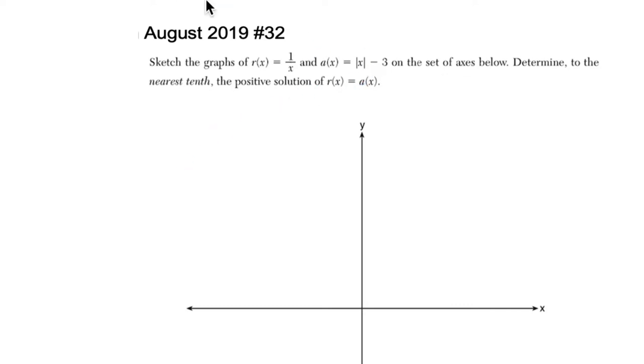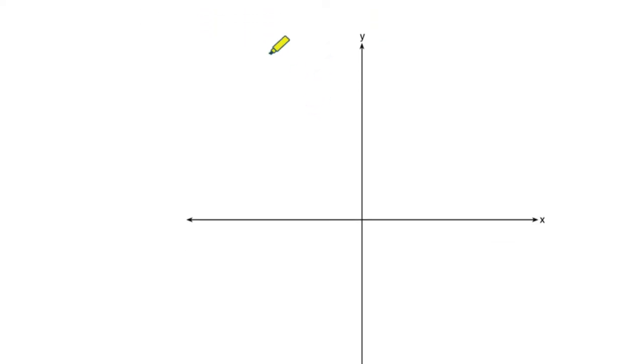Okay, so they basically want to know when does this graph, 1 over x, meet this graph, the absolute value of x minus 3. They want us to sketch it, and I'm fine with that, but I'm getting nervous here because it says determine to the nearest tenth the solution of these two things. I guess somehow we need to have a sketch to the nearest tenth. It feels unrealistic, but anyway, let's try this out.